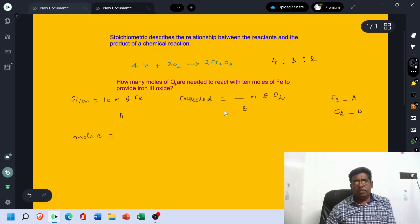Mol B. The question is how many moles of O2 are needed? B is our O2. So, Mol B is equal to Mol A times Coefficient of B divided by Coefficient of A. This is the formula.